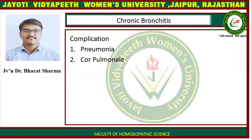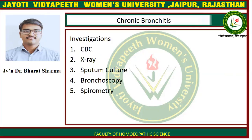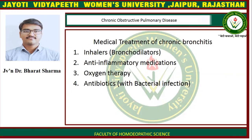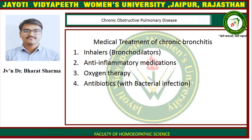Complications of chronic bronchitis include pneumonia and cor pulmonale. Investigations include CBC, X-ray, sputum culture, bronchoscopy, and spirometry. Medical treatment includes inhalers, bronchodilators, anti-inflammatory medication, oxygen therapy, and antibiotics for bacterial infections.